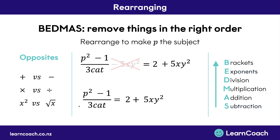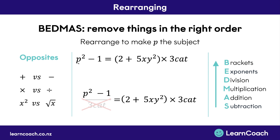Multiplication and division come next. We have the whole term on top divided by 3CAT. So we do the opposite — times 3CAT — but we have to multiply everything by 3CAT, so if in doubt put everything in brackets. Once we've done times 3CAT to everything on the right-hand side, we can get rid of the divided by 3CAT on the left. Now all that's left on the left-hand side is p squared minus 1. The minus 1 isn't connected to P by anything except the minus, so we go back to the bottom of BEDMAS and deal with that before dealing with the squared.